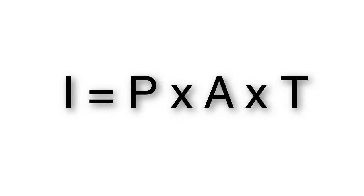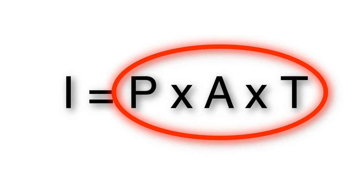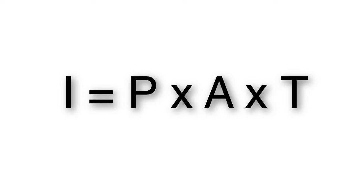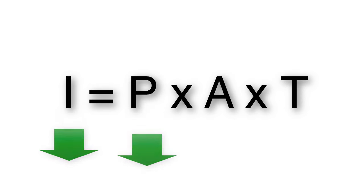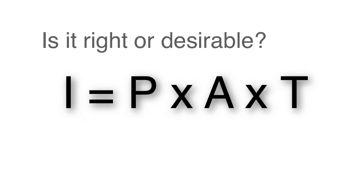A simplified way of strategizing to reduce the impact would be to manipulate the terms on the right-hand side of the equation. However, in some cases there are serious ethical considerations in doing this. For example, while reducing the population would decrease the impact, manipulating individuals' reproductive rights or deciding to end the lives of people are serious moral infractions.